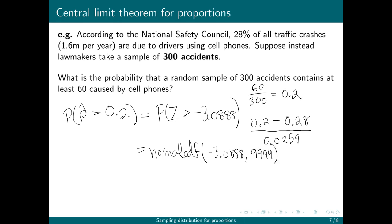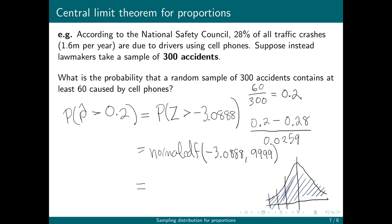It's always a good habit to draw the picture. Here's the mean, one standard deviation, two, three — and 0.2 is a little bit beyond three standard deviations below the mean. So virtually the entire normal curve lies above that point, and I should get an answer close to 100%. Sure enough, the result rounds to 0.999.